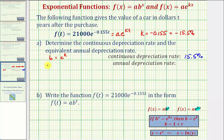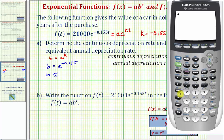Beginning with b equals e to the k, we have b equals e raised to the power of negative 0.155. Going to the calculator — second, natural log — gives e raised to the power of negative 0.155. So b to four decimal places is approximately 0.8564.